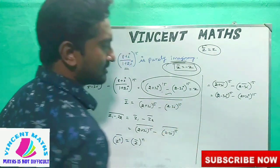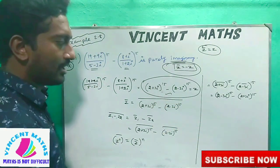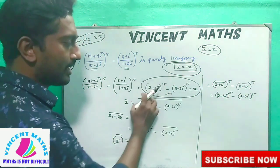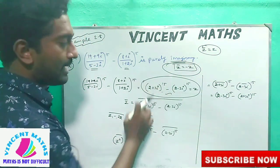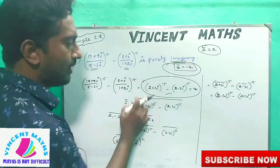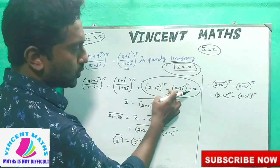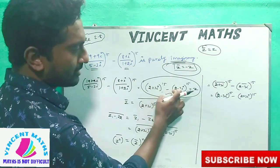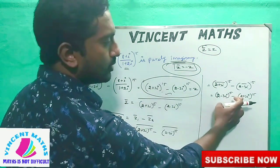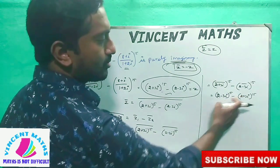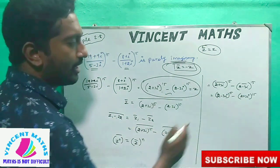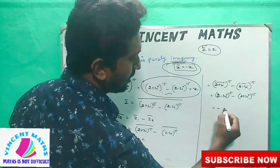2 plus 3i, power 15 — now this is the answer. If we get the value, this is the answer. What is the difference? Minus 2 minus 3i versus minus 2 plus 3i — the sign has become different.